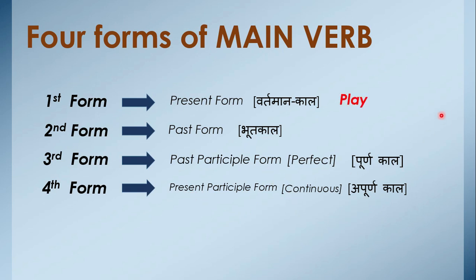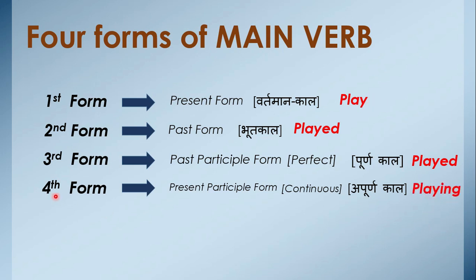Example lete hain: play. Play ka mtlob hootai hai kheelna. Play present form mei hai, aur iski past form hogi played — yaha par ed laga diya hai. Isi tarah iski third form bhi hai played. Aur fourth form mein, agar koi kaam continuity mein chal raha hai, toh first form ke saath ing laga denge — toh playing ban jayega. So played is second and third form (with ed) and playing is fourth form (present participle).